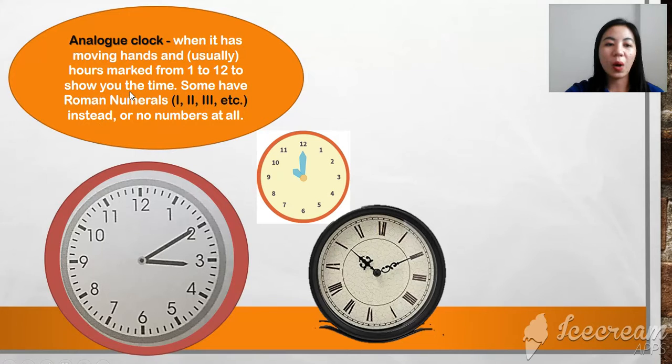We also have the analog clock when it has moving hands and usually hours marked from 1 to 12 to show you the time. Some have Roman numerals, just this one, 1, 2, 3, instead, or no numbers at all. So this is the example: 1, 2, 3, 4, 5, 6, 7, 8, 9, 10, 11, 12.